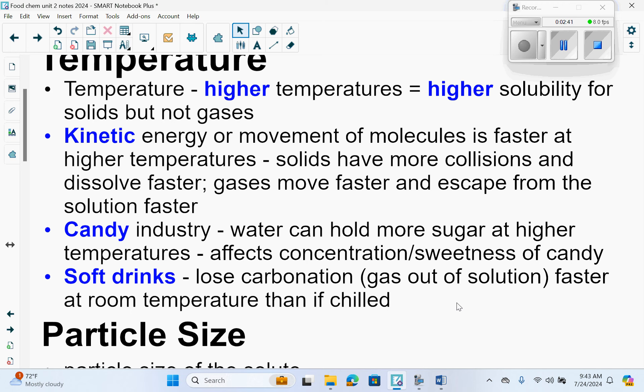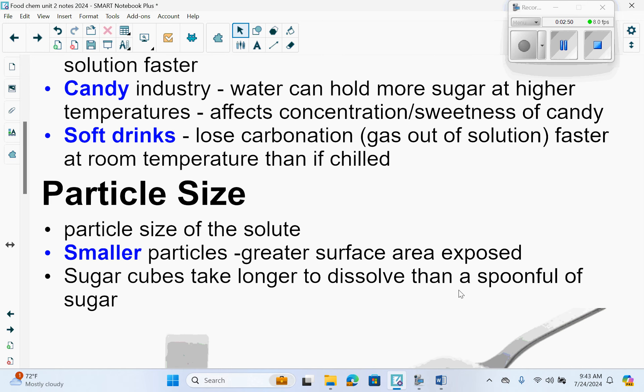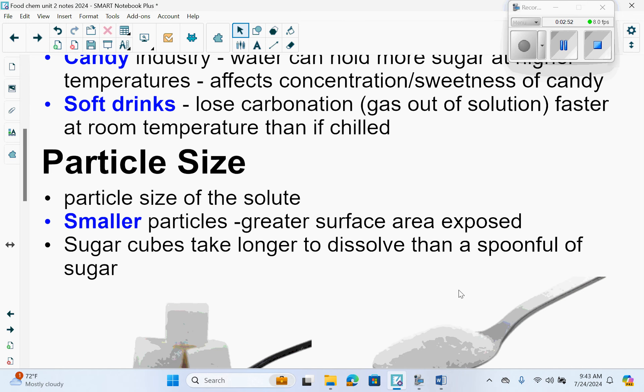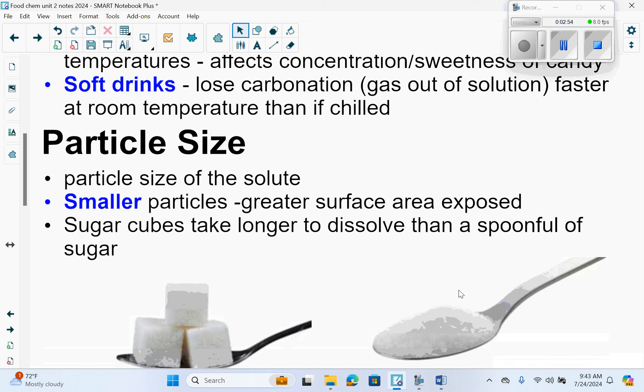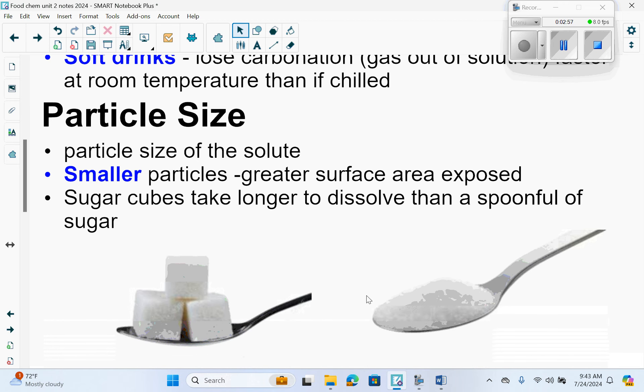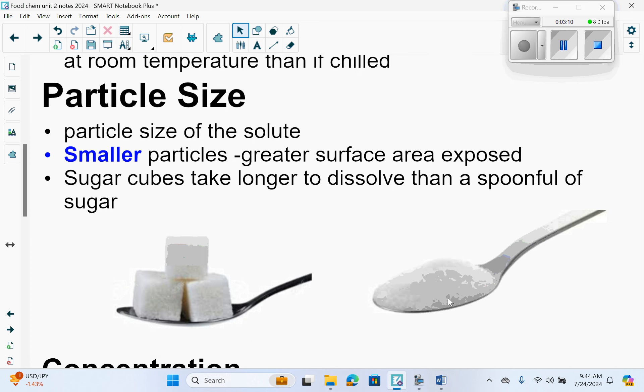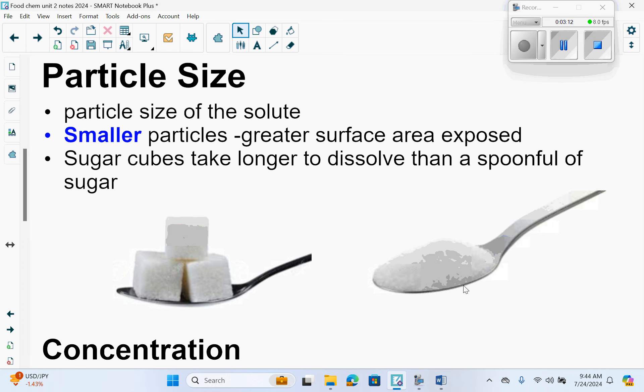Soft drinks will lose their carbonation. The gas will come out of solution faster at room temperature than if it is chilled. Particle size affects solubility. Smaller particles have greater surface area exposed. Sugar cubes would take longer to dissolve than a spoonful of sugar because there's greater surface area in that spoonful. More of it is exposed to the solvent.